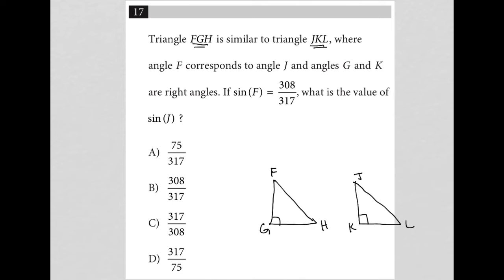Then it says if sine F is equal to 308 over 317. Well, sine from SOH CAH TOA which hopefully you recall - SOH - the sine of an angle is equal to the opposite side of that angle divided by the hypotenuse.